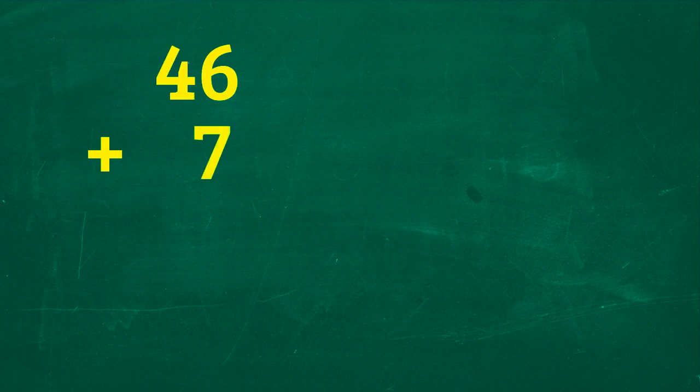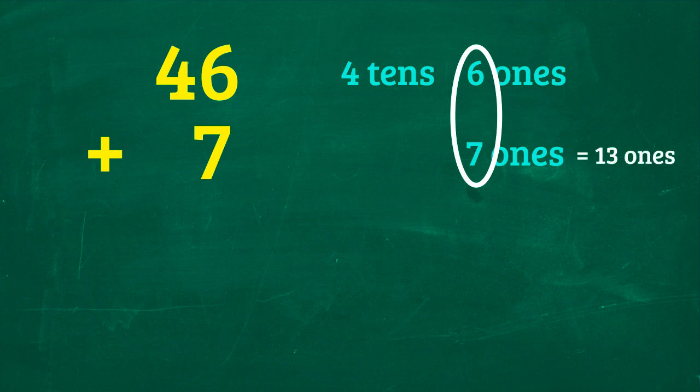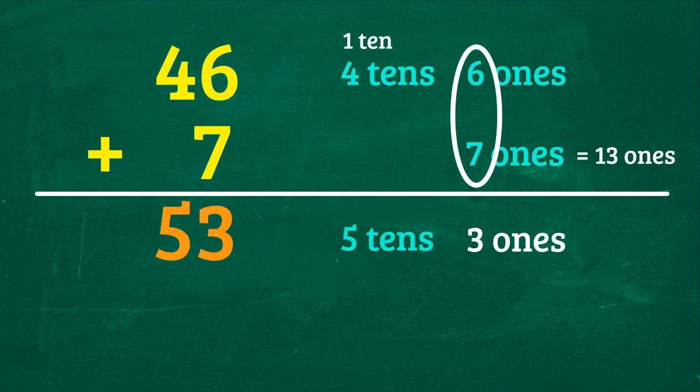Here's another exercise. 46 plus 7. Add the ones first. 6 plus 7 is equal to 13 ones. Regroup this to one 10, three ones. Add the one 10 to four 10s and we'll come up with five 10s, three ones, or 53. 46 plus 7 is equal to 53.